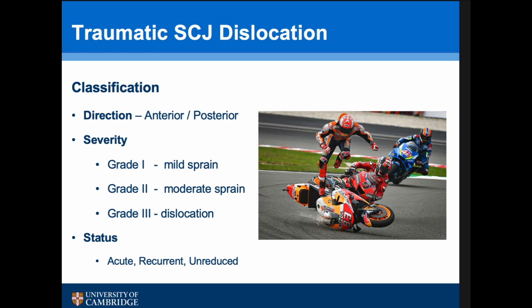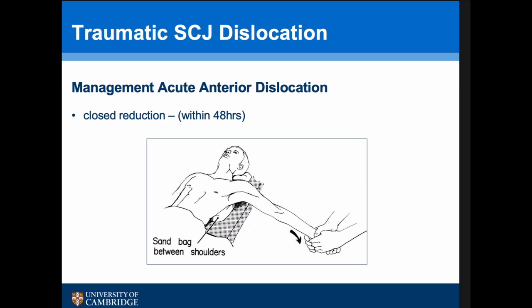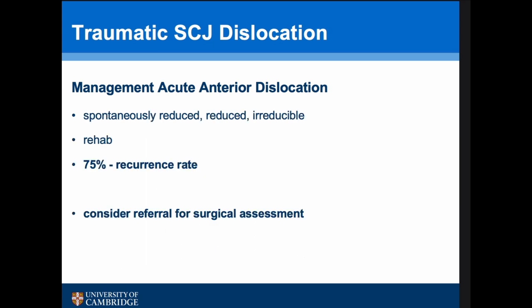Dislocations can be classified by direction (anterior or posterior), severity (grade 1 mild sprain, grade 2 moderate sprain, grade 3 dislocation), or status (acute, recurrent, or unreduced). Management of an acute anterior dislocation within 48 hours is a closed reduction, best done in an operating theatre with a sandbag beneath the shoulder, longitudinal traction on the arm, and manual pressure on the clavicle to reduce it.